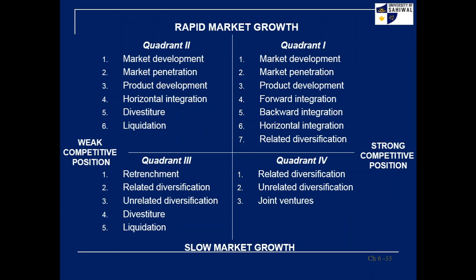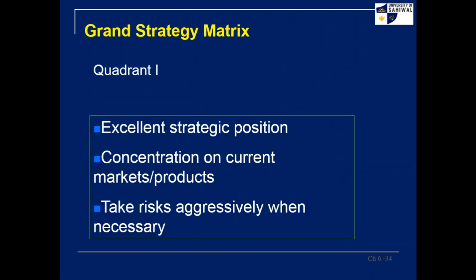So this Grand Strategy Matrix is developed based on market growth and competitive position. We select the strategy based on the placement of our SBUs — strategic business units — in the relevant quadrant. In this way, we can select the appropriate strategy.